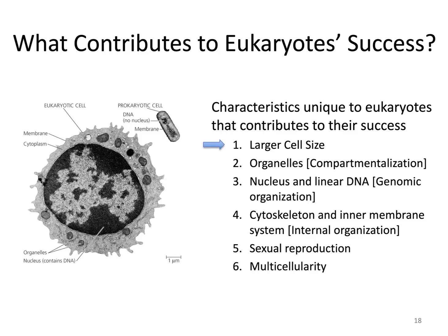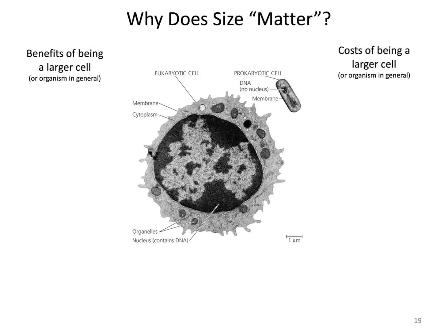Why does size matter? Comparing a eukaryotic cell to a prokaryotic cell — the prokaryotic cell should probably be even smaller on this diagram — what are the benefits of being a larger cell? Why is it advantageous for a eukaryotic cell to be larger? And not just for an individual cell, but also for an organism in general, since eukaryotes can be multicellular and built up with many cooperating cells.